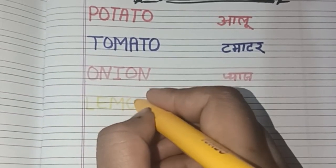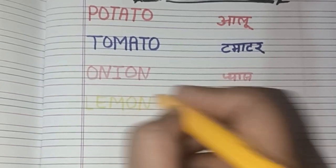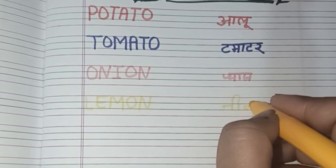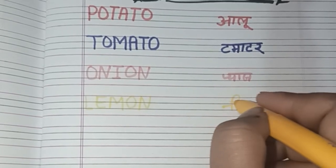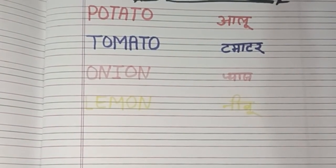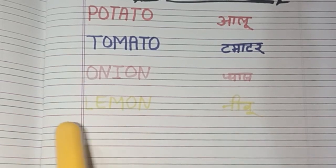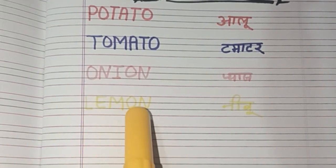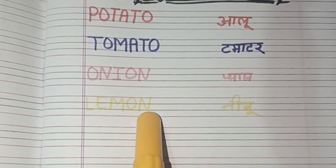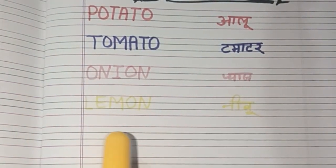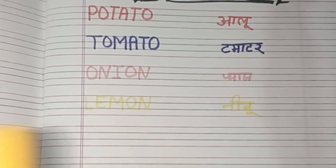L-E-M-O-N. Lemon! Lemon means Nebu. L-E-M-O-N, Lemon, Lemon means Nebu. Yellow color.